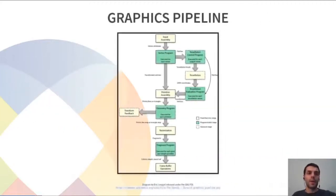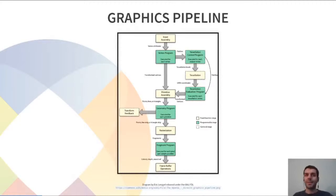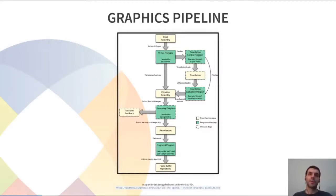To give you some context, this is a typical graphics pipeline representation in many APIs like OpenGL, DirectX, or Vulkan. You've probably seen variations of this a million times. The pipeline is divided in stages, some of them are fixed function, some of them programmable with shaders. Each stage usually takes some data from the previous stage and produces data to be consumed by the next one, apart from using other external resources like buffers or textures or whatever.